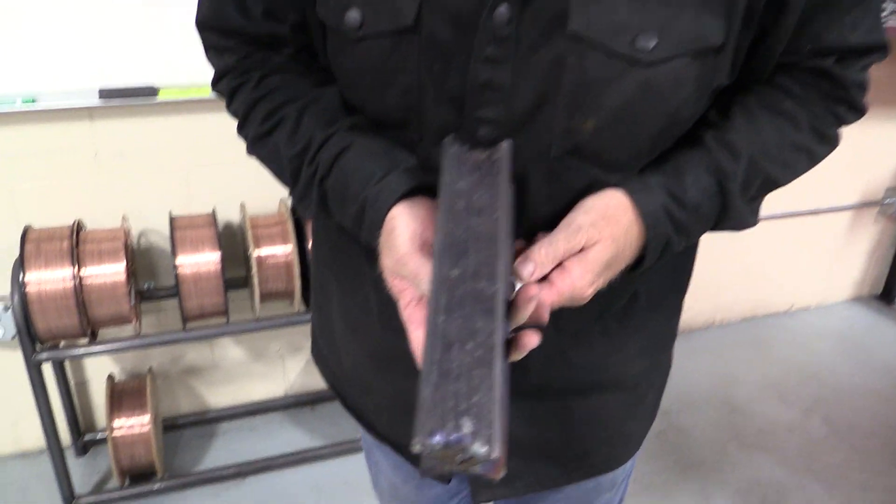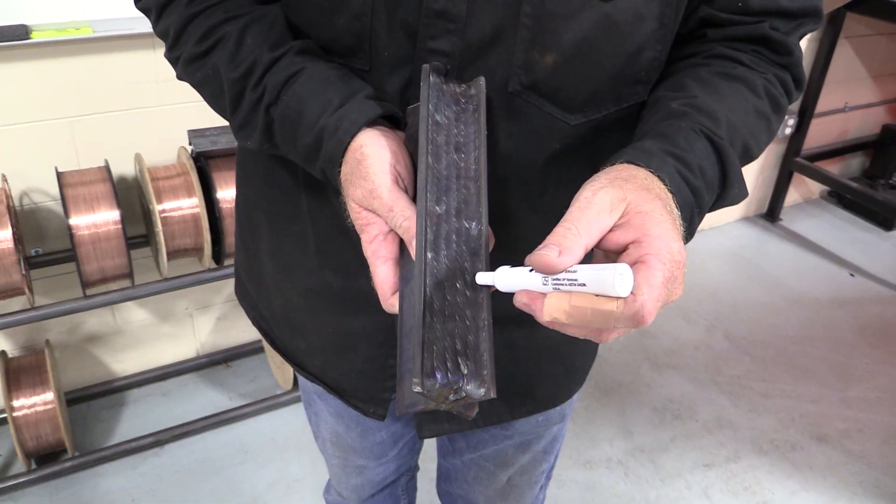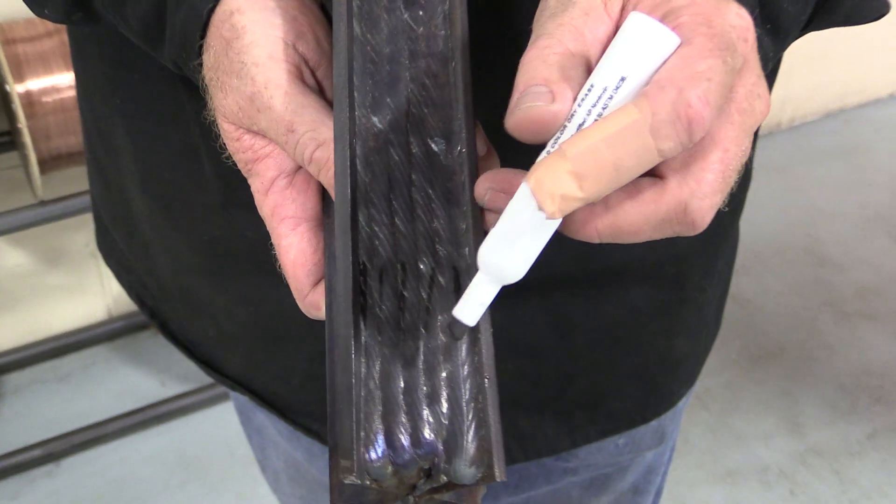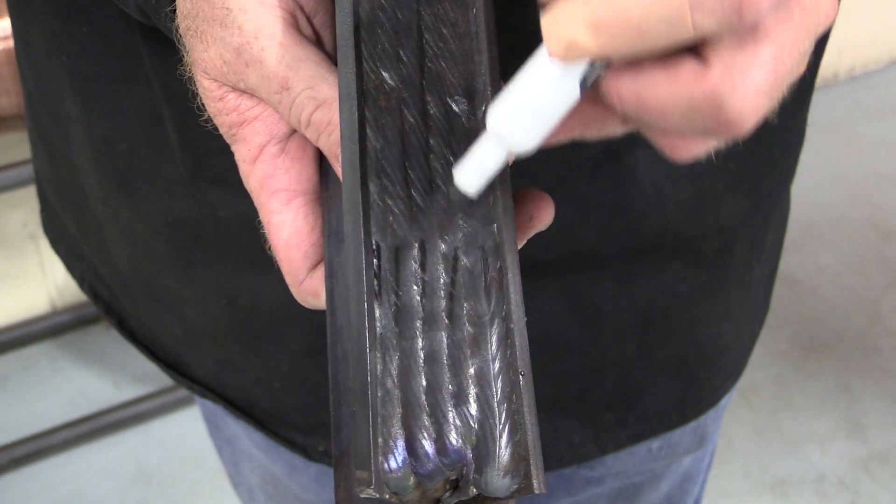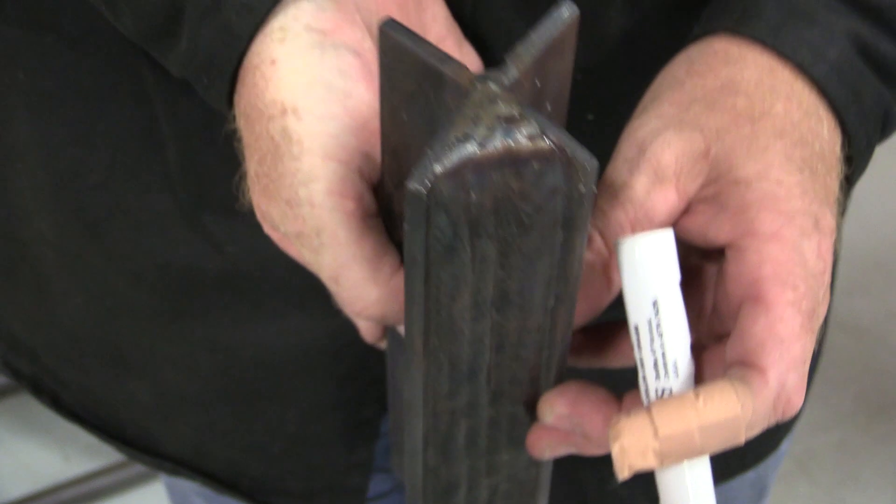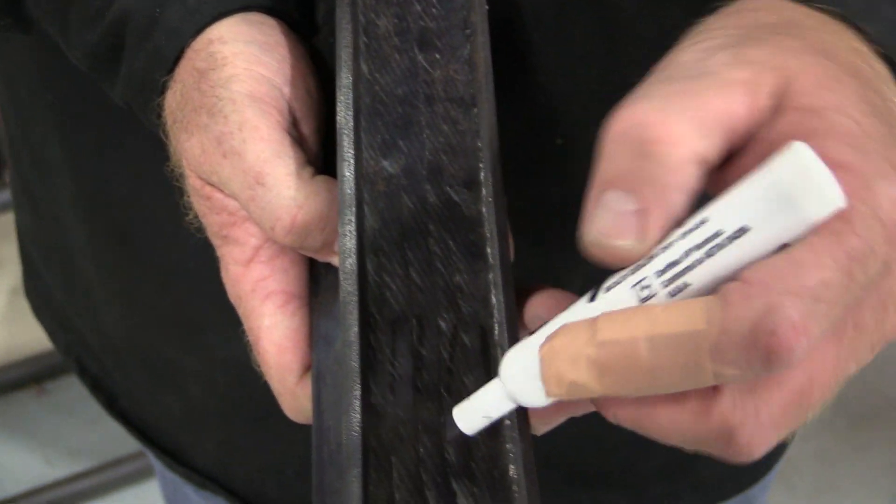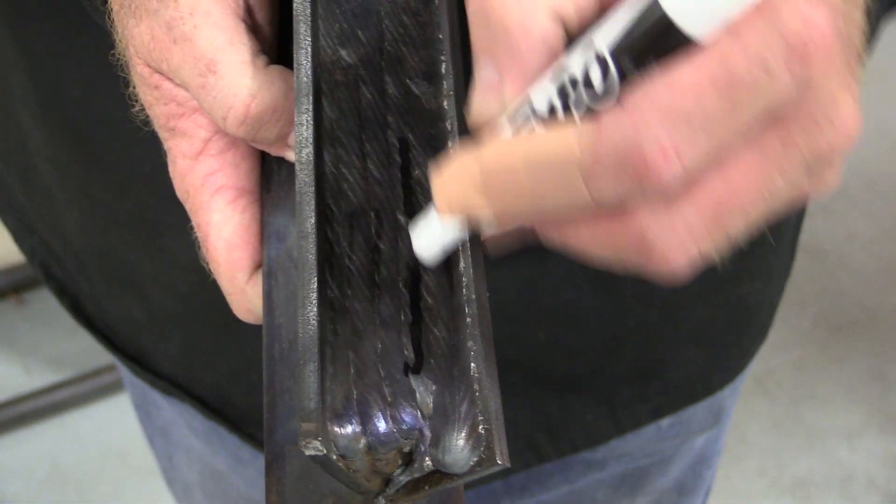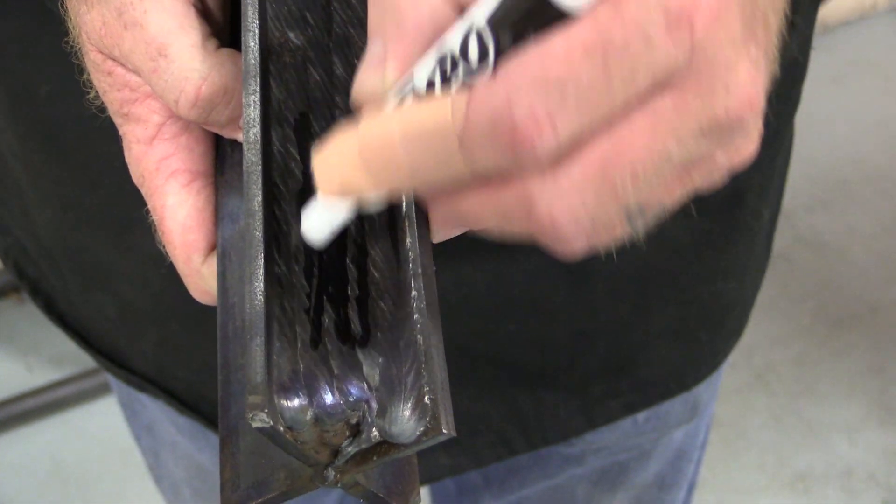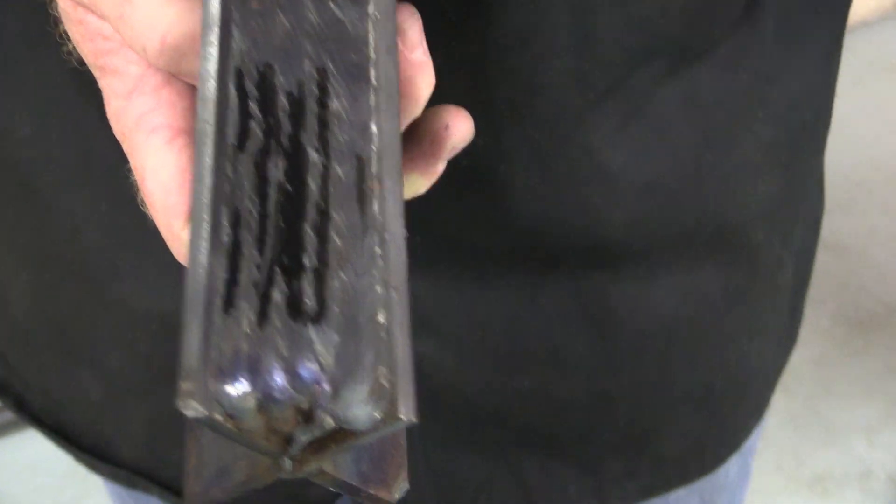Well first we need to tell you what's a stringer bead and what is a weave bead. So what I have right here are stringer beads. If you notice, this is a whole bunch of separate weld beads that are lapped up on each other and fused together to create one big weld. It's done with multiple layers of weld beads laid up and fused next to weld beads. This is one technique for welding.